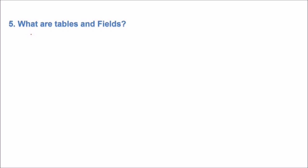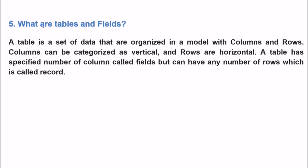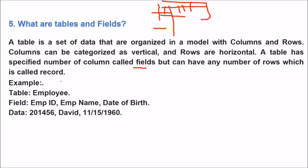What are tables and fields? When talking about RDBMS, data is organized in the form of tables. A table has rows and columns. The table is a set of data organized in a model with columns and rows — columns are vertical and rows are horizontal. A table has a specified number of columns called fields, but can have any number of rows, which are called records. For example, a table can be 'Employee', with fields like Employee ID, Employee Name, and Date of Birth.